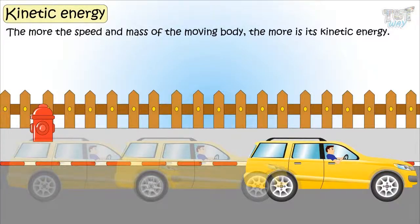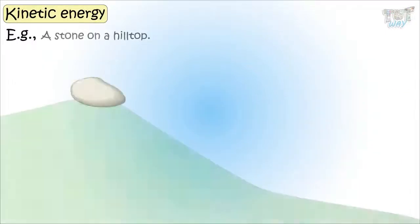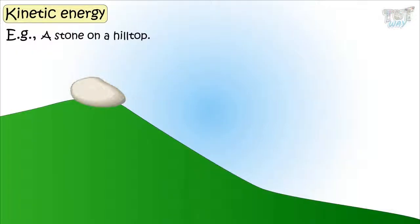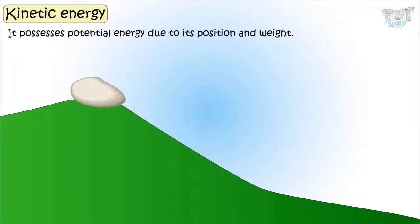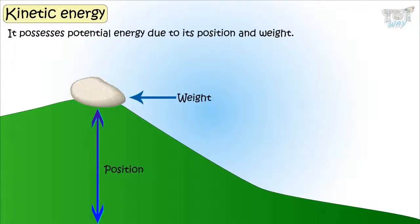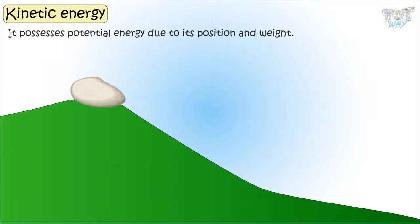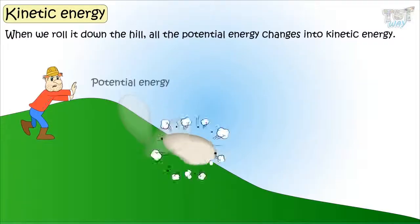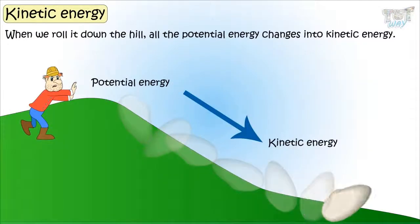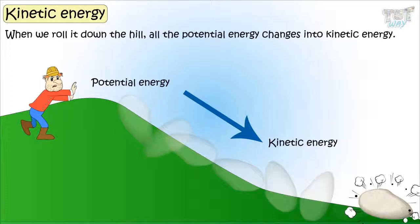Let's see some examples. Here is a stone on a hilltop. What kind of energy does it possess? It possesses potential energy due to its position and weight. Its position is much above the ground level and it also has a lot of weight. When we roll it down the hill, all the potential energy will change into kinetic energy — that is, its motion. So the fast-moving stone has kinetic energy.